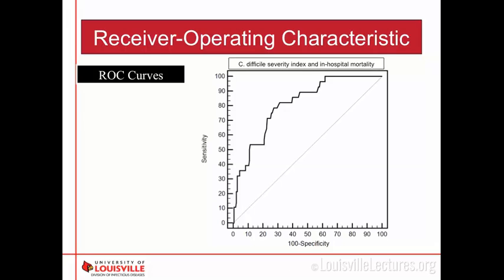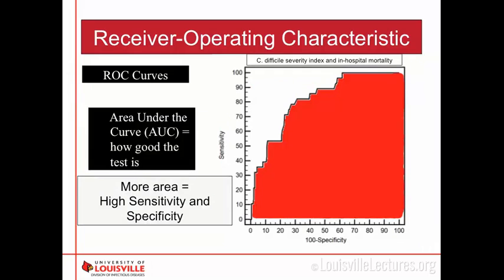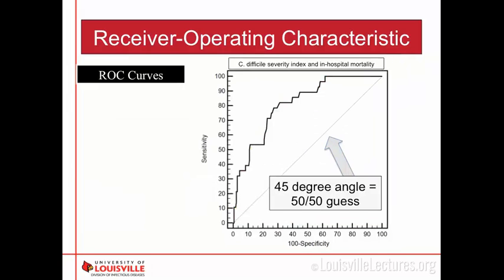How you interpret ROC curves depends on your situation and the disease. For this example, at 90% sensitivity you can expect a 55% false positive rate. As a clinician, you have to decide the trade-off. The area under the curve tells you how good your test is — you always want more area under the curve because this means higher sensitivity and specificity. No test is perfect, so you must decide your trade-off. The 45-degree diagonal line represents a 50-50 guess, essentially random chance.